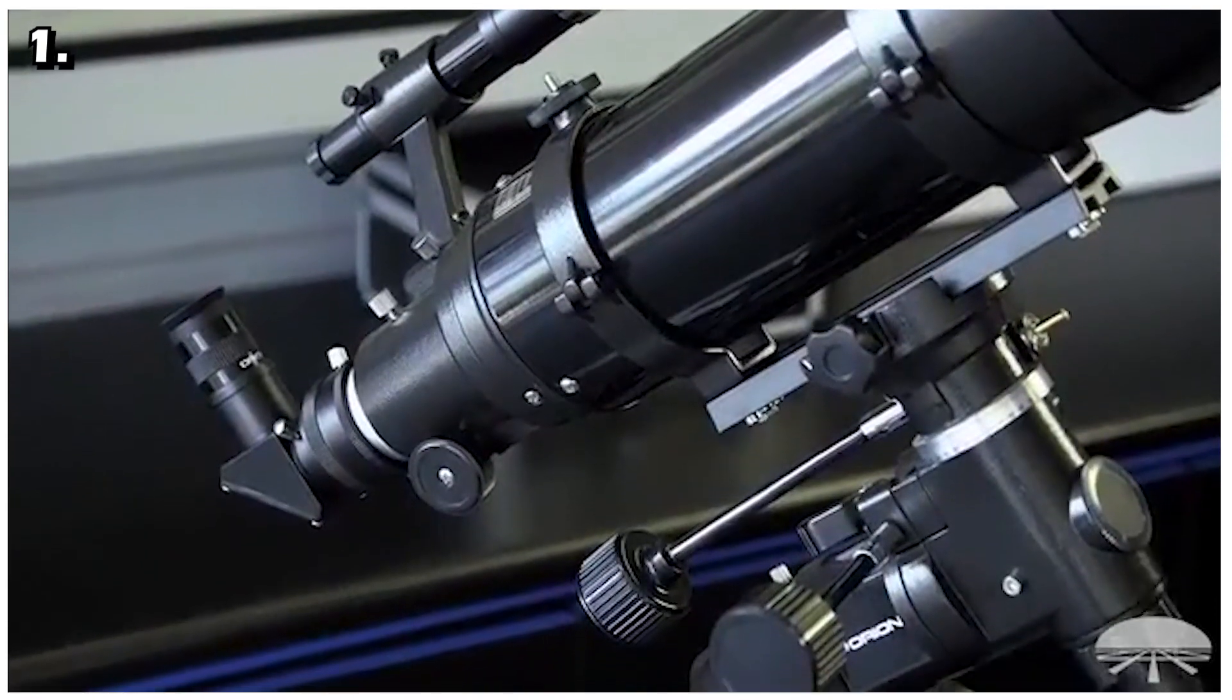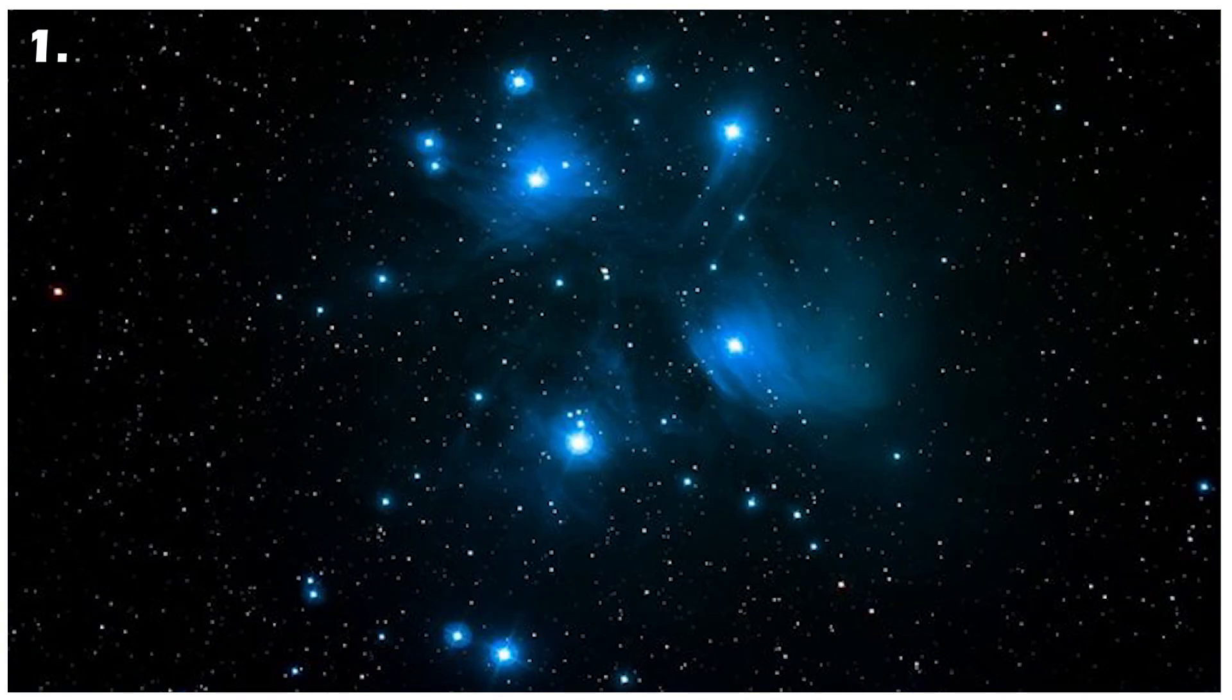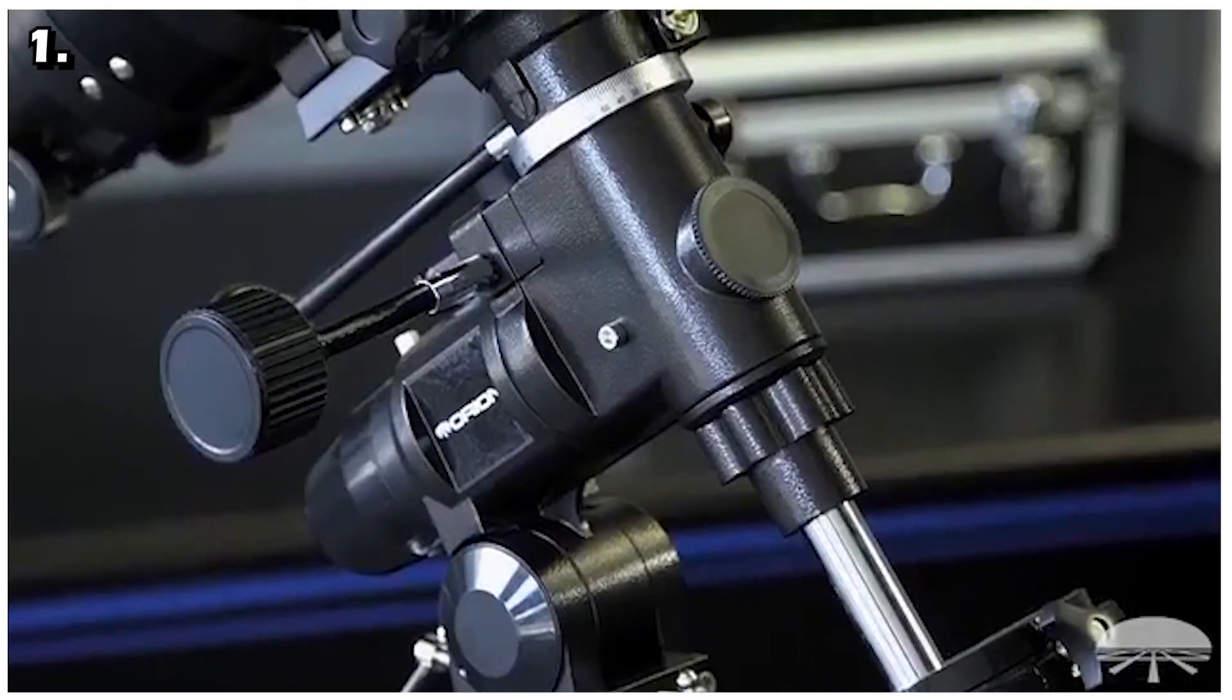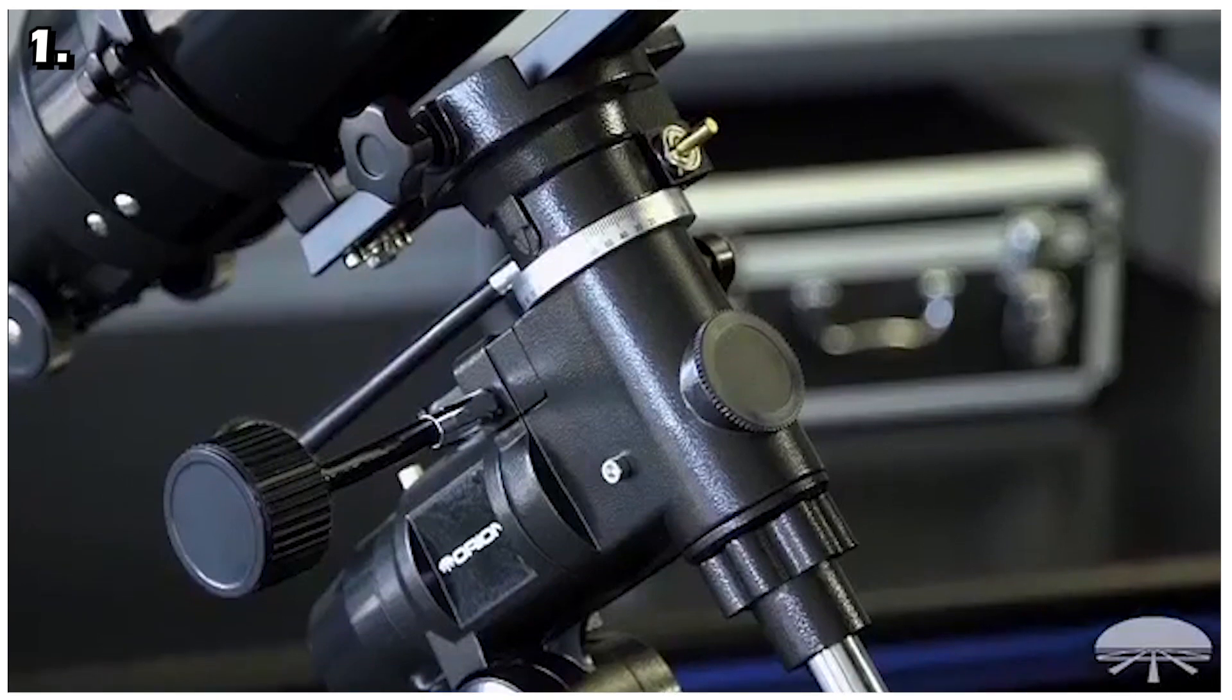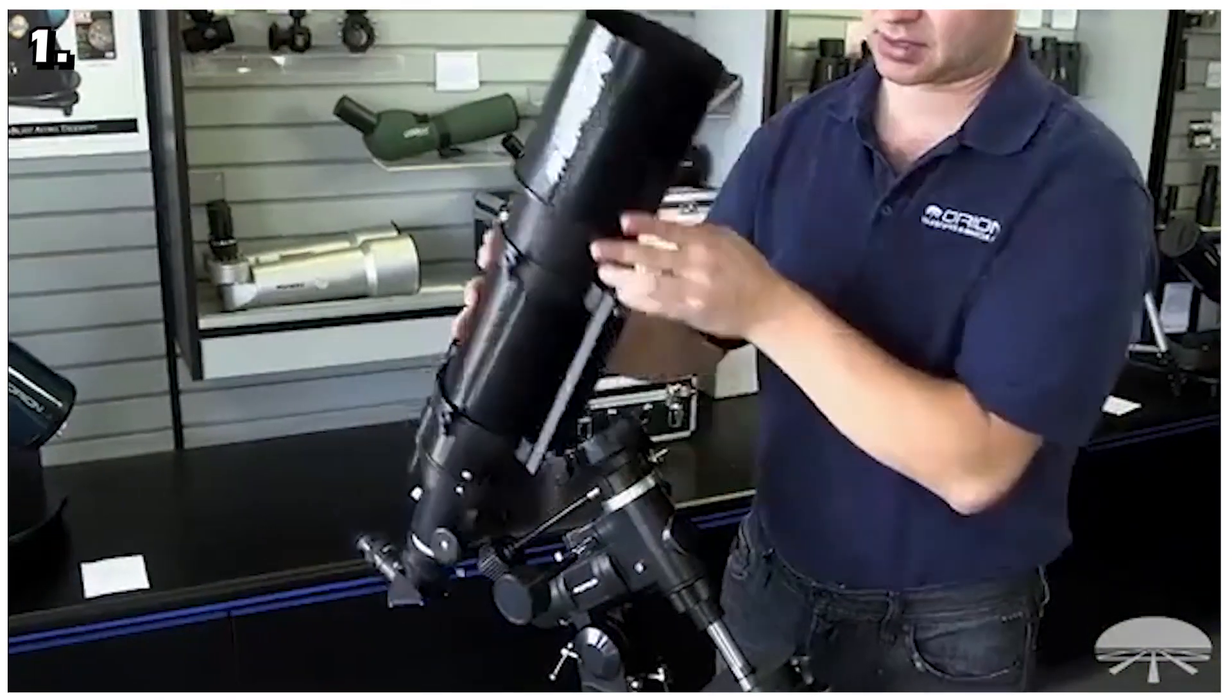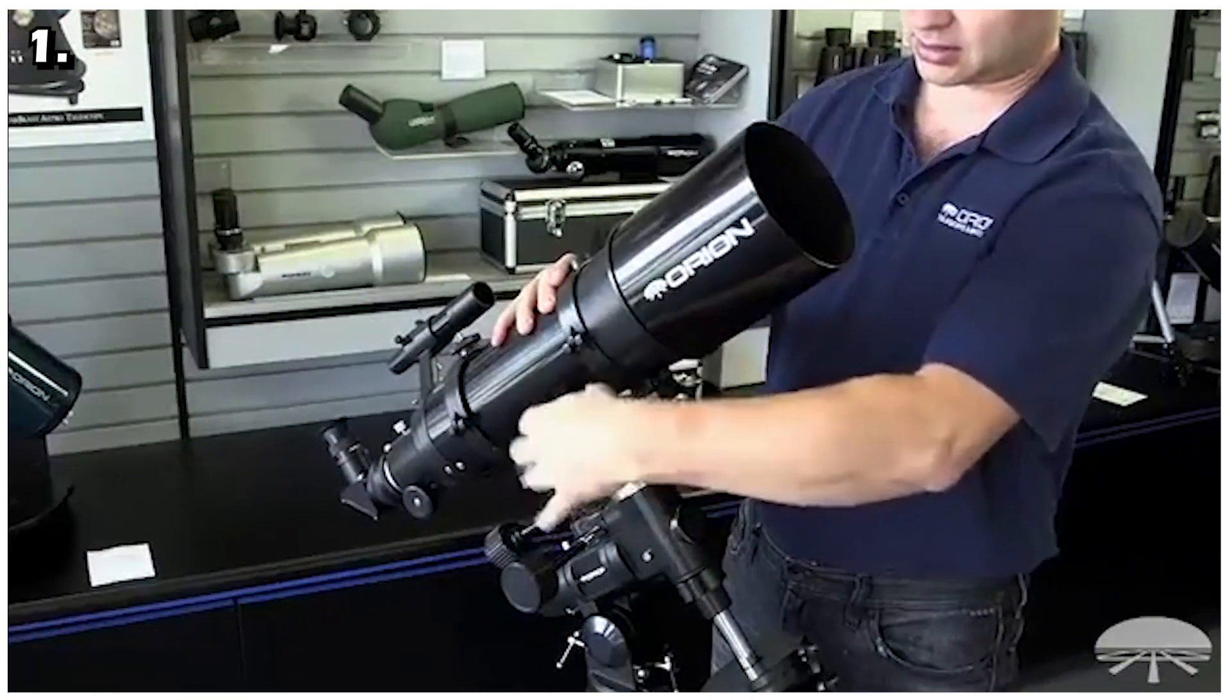This compact rich field refractor telescope is designed for wide field observation of nebular clouds, star clusters, and even distant galaxies. The telescope features multi-coated optics and a well-baffled optical tube to ensure good contrast in your views. Its optical tube measures just 26 inches long including the dew shield, so it earns high marks for portability.